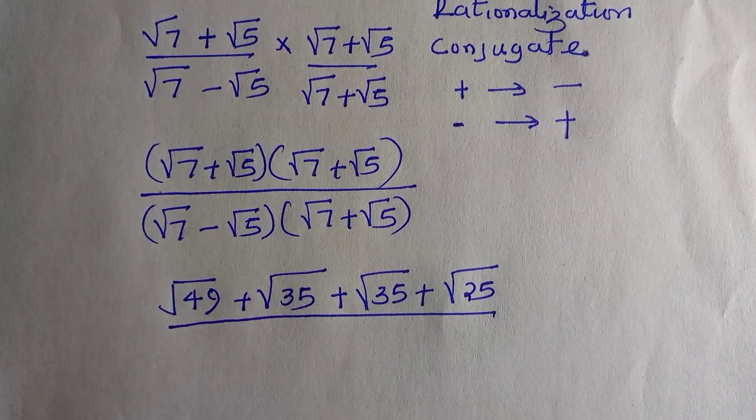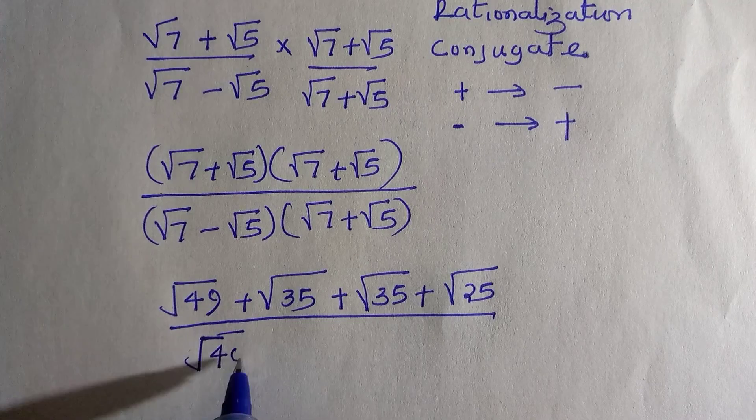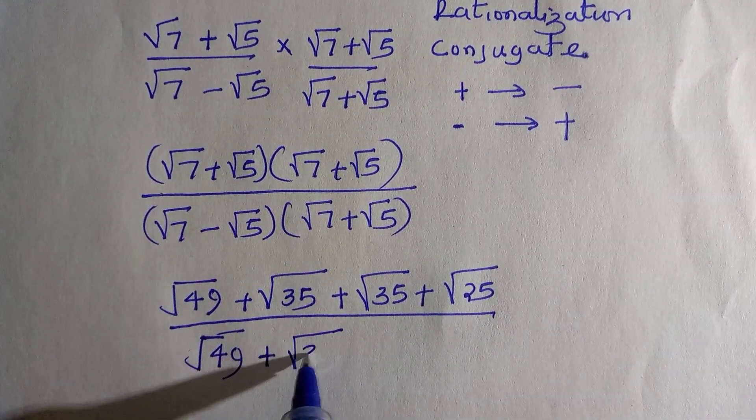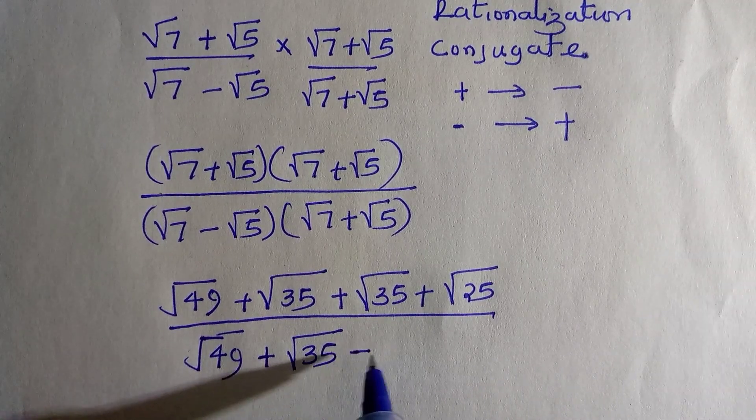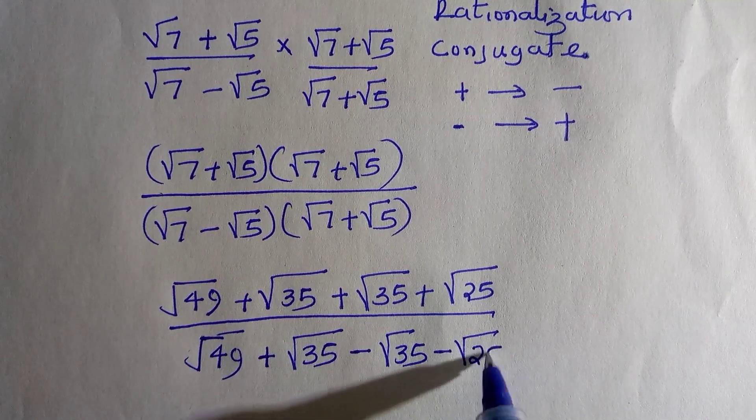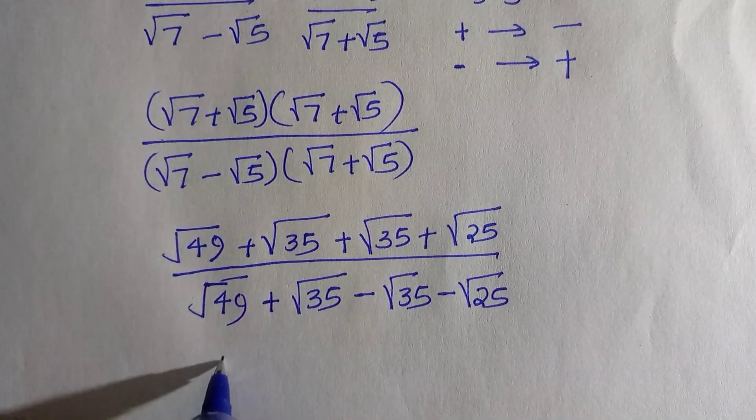For the denominator, doing the same thing: we have √7 times √7 which is √49, plus √35, minus √35, minus √25.